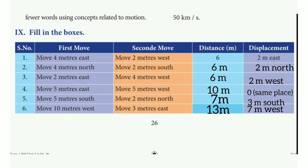Fill in the table answers: First row — answer 2, second round answer 6 meters, 2 meters north. Third: 6 meters, 2 meters west. Fourth: 10 meters, 0, same place. Fifth: 7 meters, 3 meters south. Sixth: 13 meters, 7 meters west. This is the complete book back answer. This video is useful — thanks for watching. Subscribe to this channel for the next lesson.